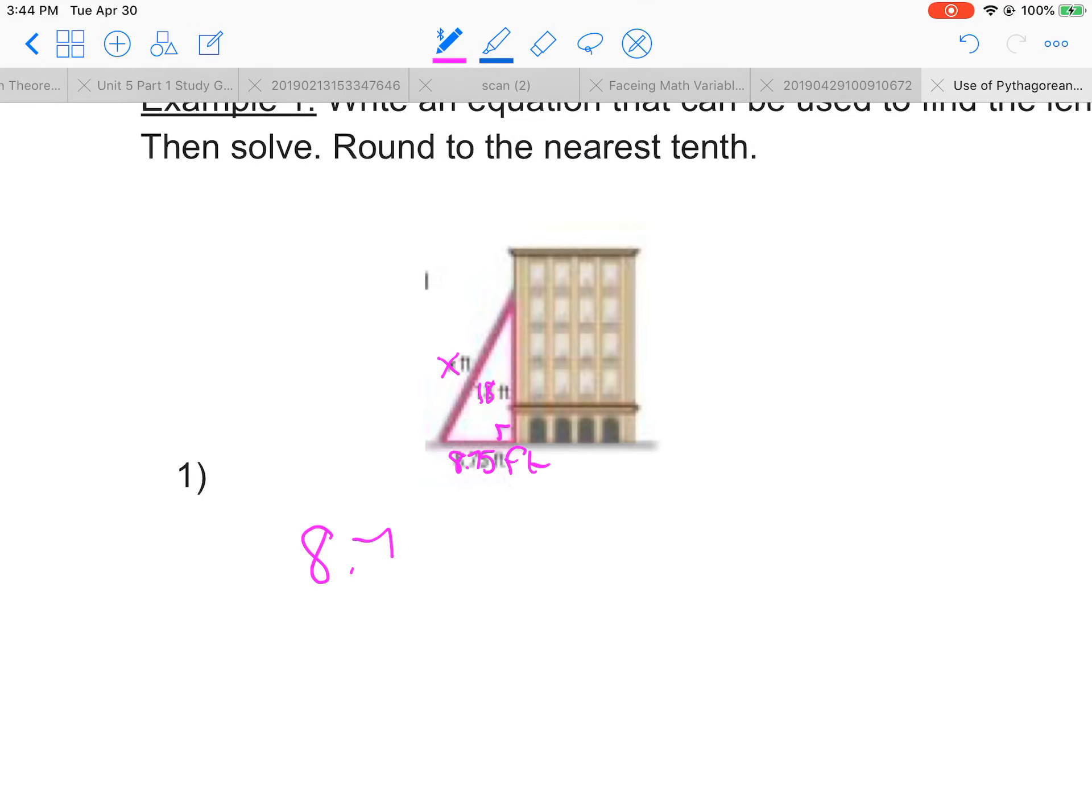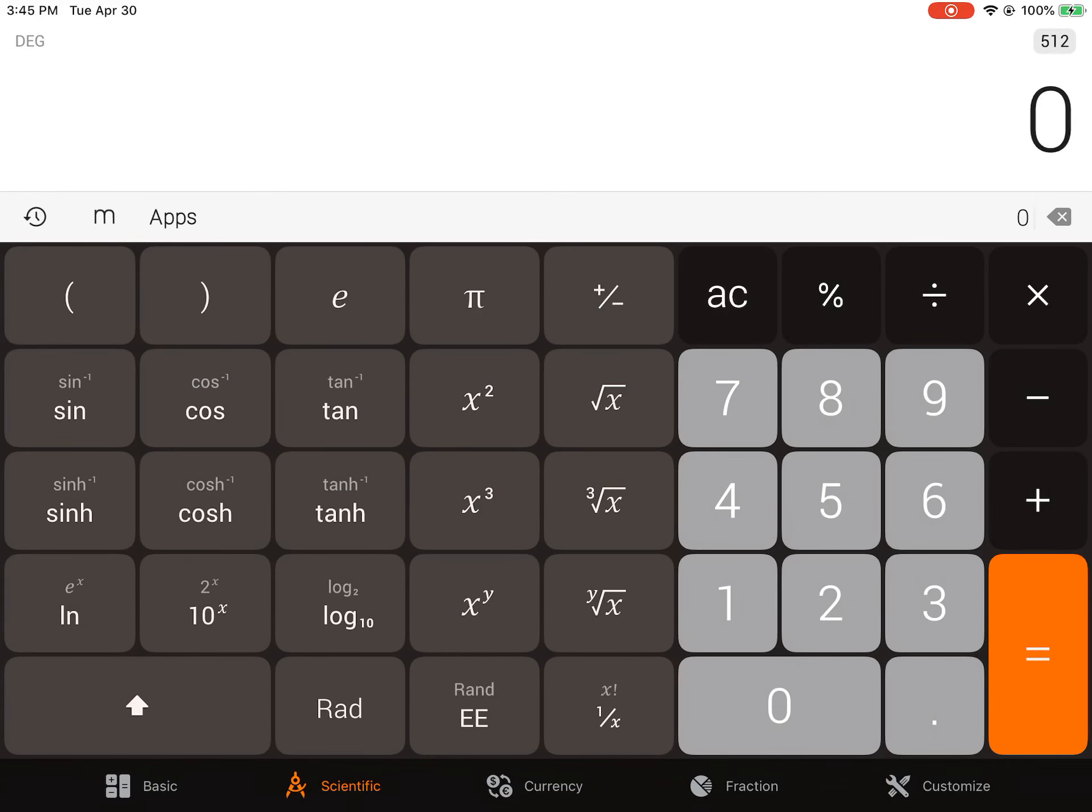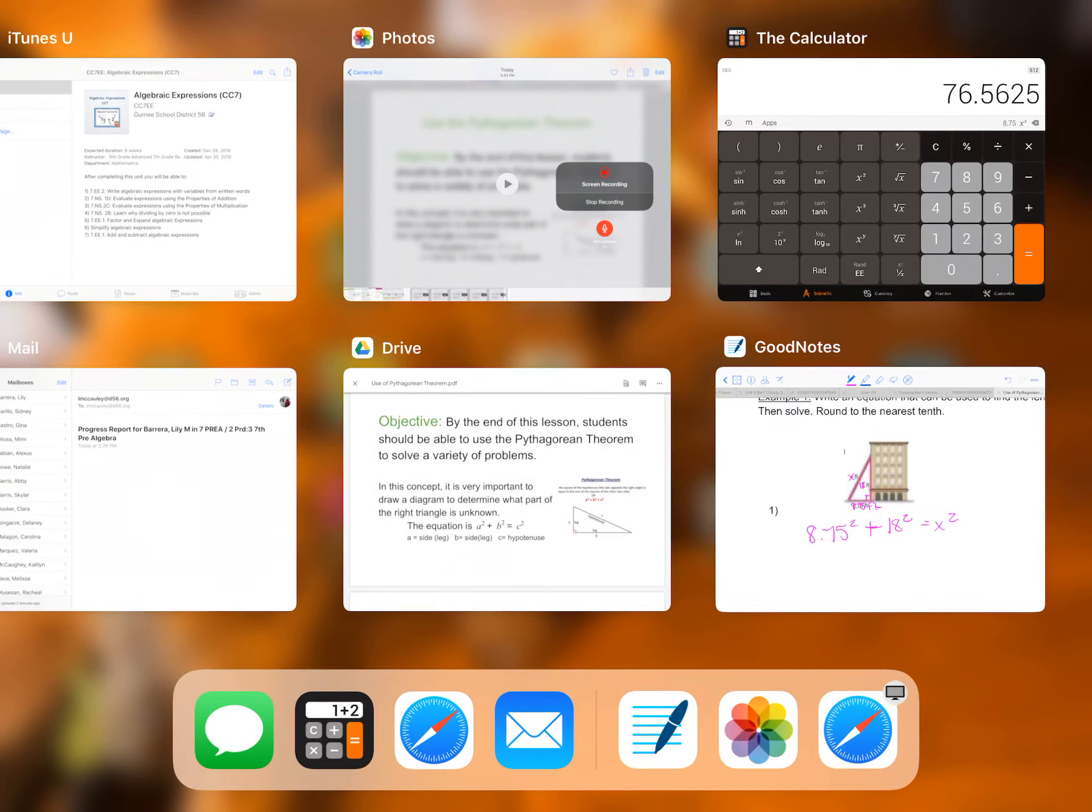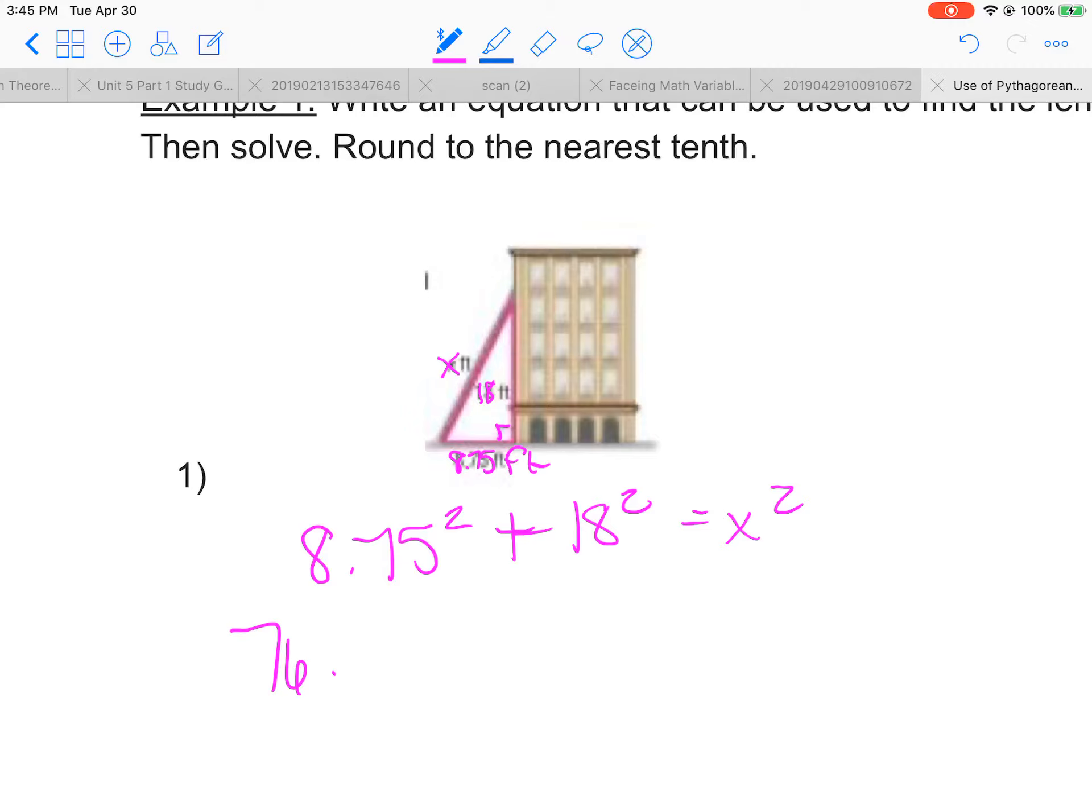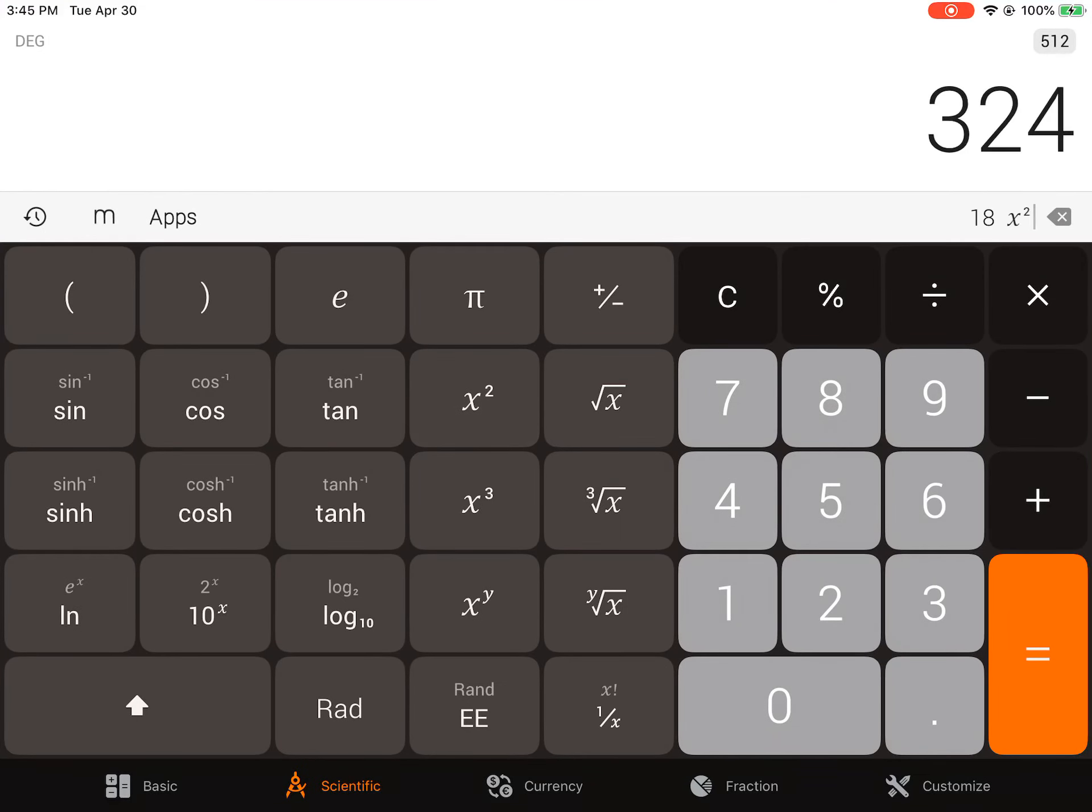So we will write 8.75 squared plus 18 squared equals x squared. So let's go ahead and get our calculator out and solve that. So 8.75 squared is 76.5625, so 76.5625 plus 18 squared.